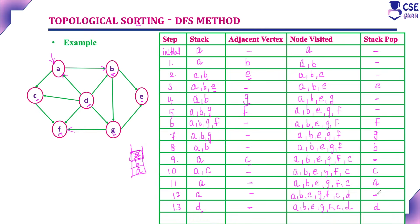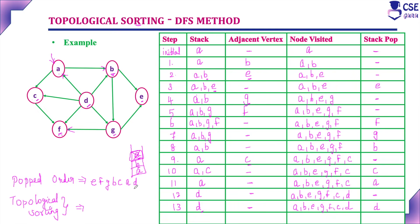Now considering the popped order: the order in which elements were popped from the stack is E, F, G, B, C, A, D. To get the topological sequence, reverse this popped order.